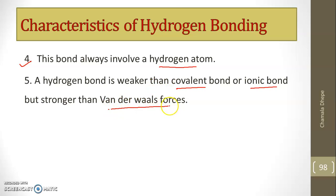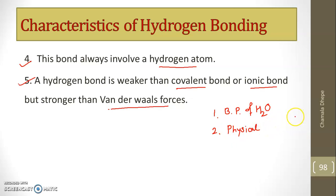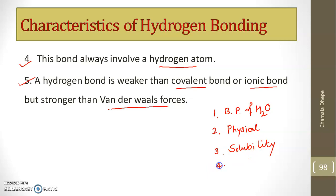To summarize, these are the characteristics of hydrogen bonding. First, the boiling point of water is 100°C due to the association of different molecules. Second, the physical state — ethane is gaseous due to the absence of hydrogen bonding, while water is liquid at room temperature due to its presence. Third, solubility — water dissolves ionic compounds due to its polar nature. Fourth, hydrogen bonding must involve a hydrogen atom, and it is weaker than covalent or ionic bonds but stronger than van der Waals forces.